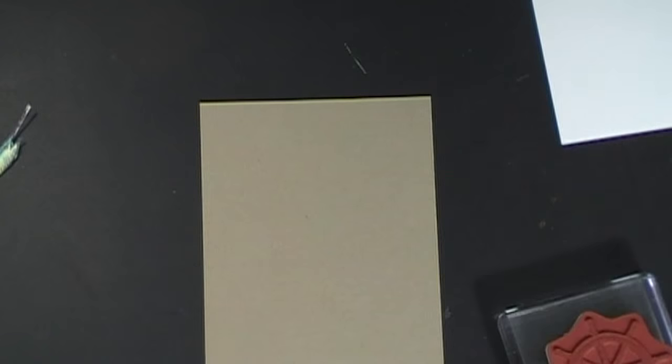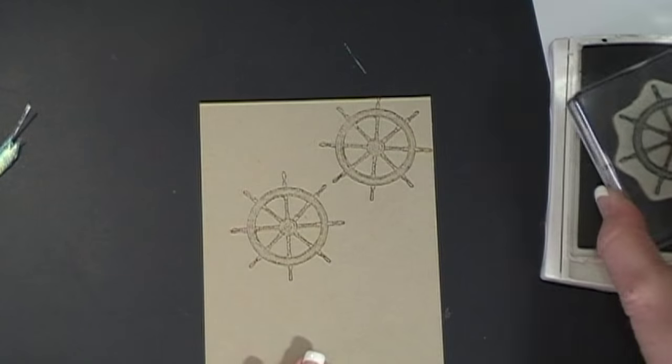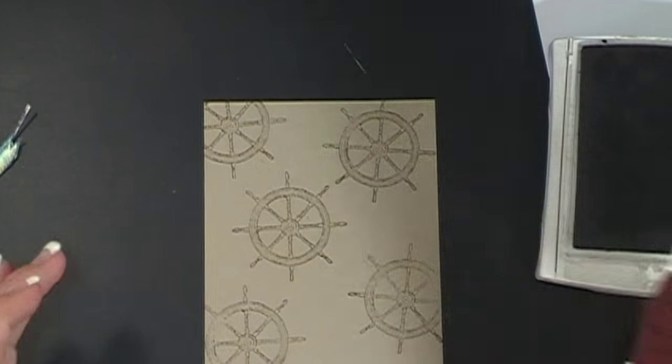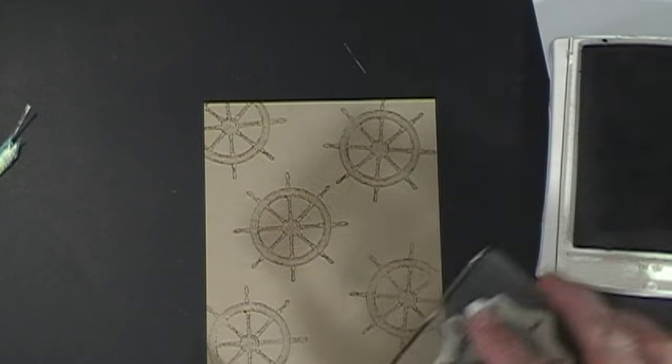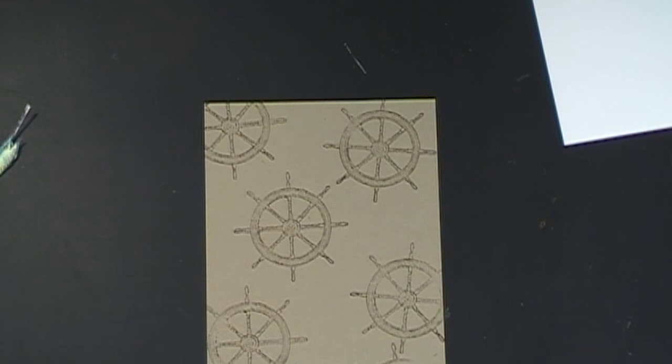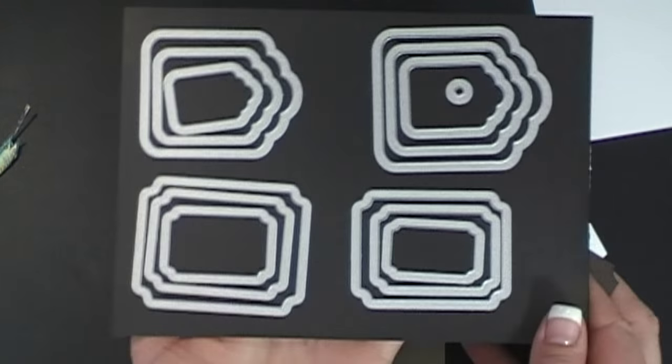Then I have a piece of crumb cake cardstock that's cut at four by five and a quarter. And I'm going to use this cool ship wheel, and I'm just going to stamp this wheel kind of randomly around the crumb cake paper.